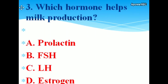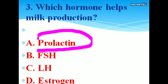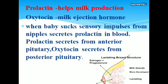Which hormone helps milk production? Options: A. Prolactin, B. Follicle stimulating hormone, C. Luteinizing hormone, D. Estrogen. The correct answer is prolactin. Prolactin hormone helps milk production.